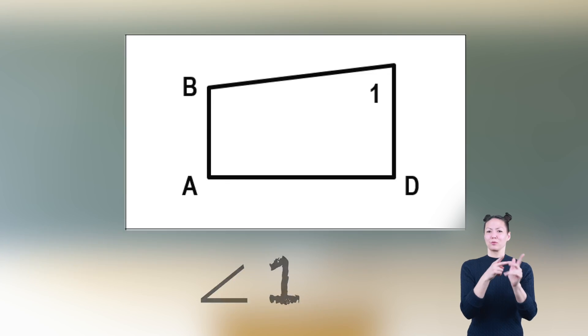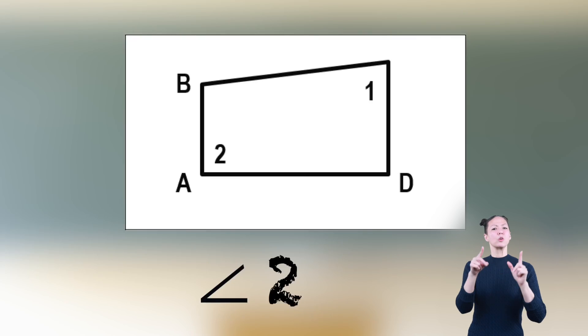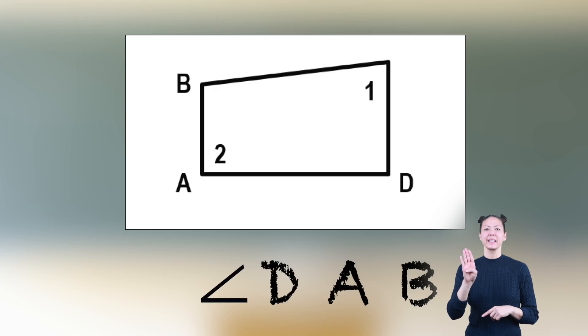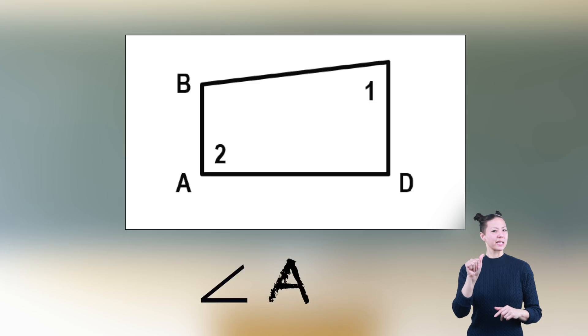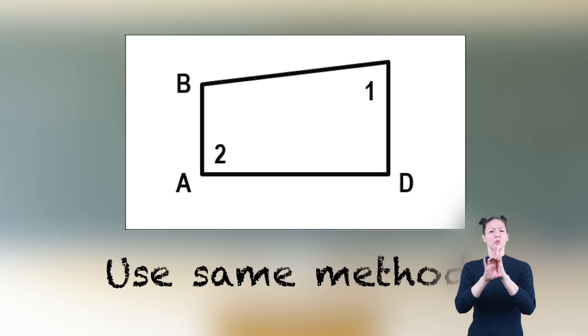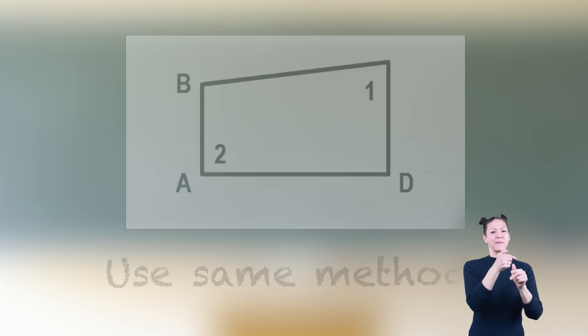In this example, angle 2 can be labeled as angle BAD, angle DAB, or sometimes angle A. All are correct. When labeling angles in a figure, use the same method for each angle. Otherwise, it could be confusing.